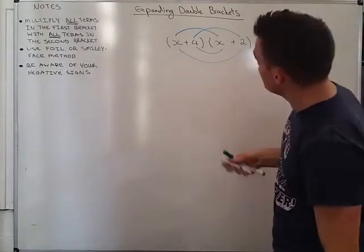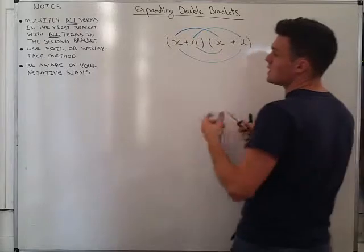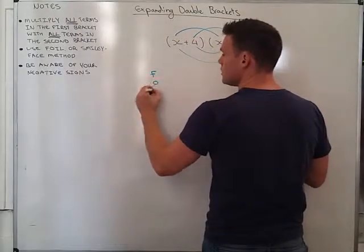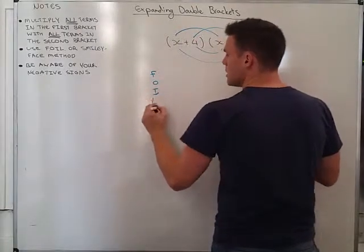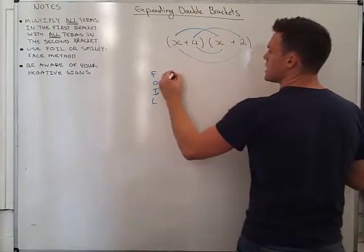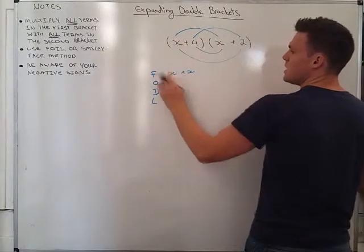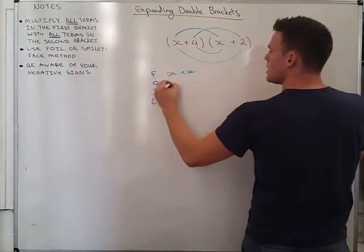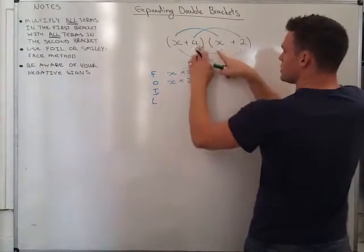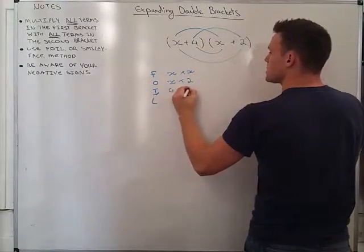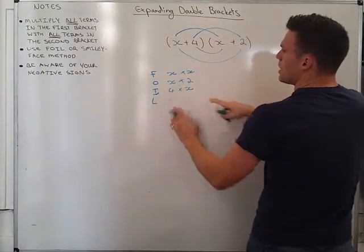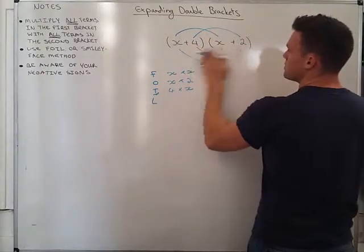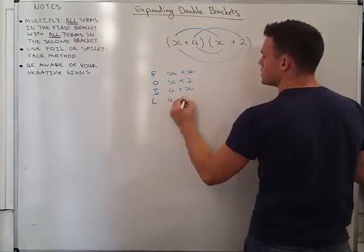The other way of using this is the FOIL method, which is simply first outer inner last. FOIL, like that. And if I multiply first by first, that's x times x. Outer, the two outer ones, x times 2. Inner, the two inner ones, 4 times x. And my last terms together, so the last terms in both the brackets, 4 times 2.